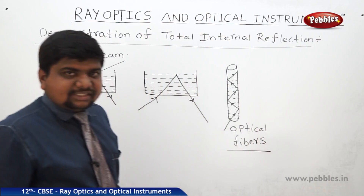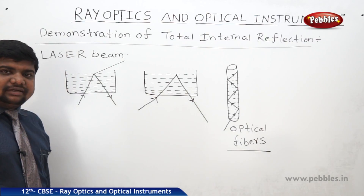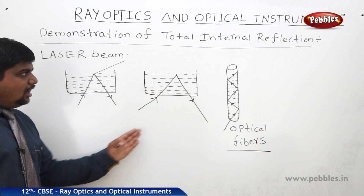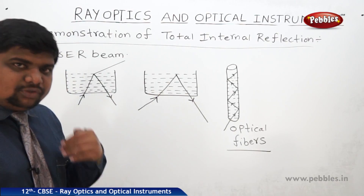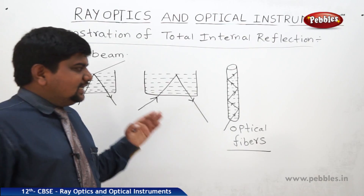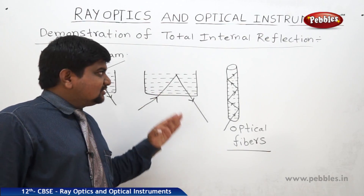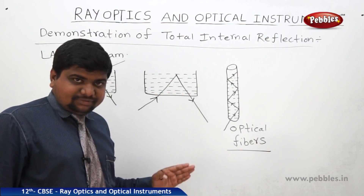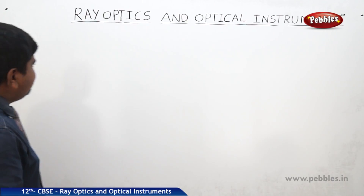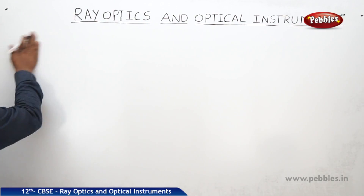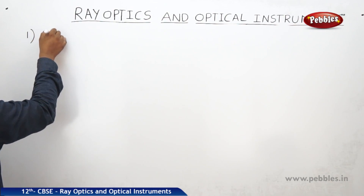So this is a small demonstration about total internal reflection — how it is visible to us in our daily life and what are the applications of this concept. One of the best examples of total internal reflection is the mirage.